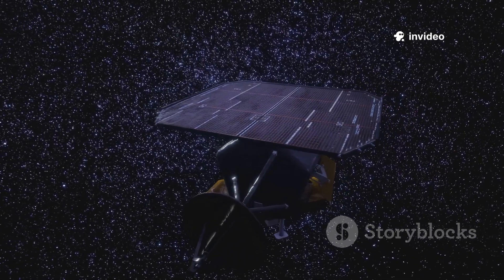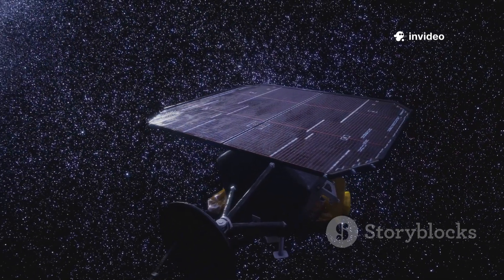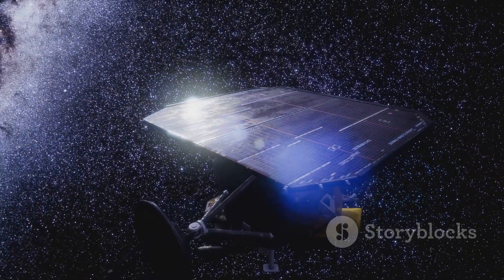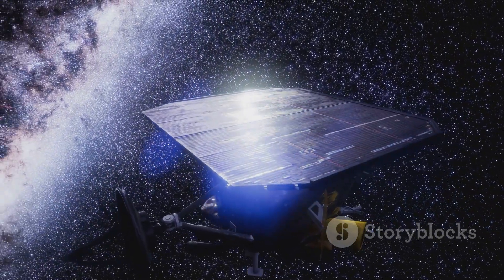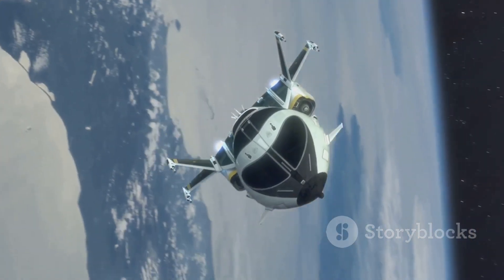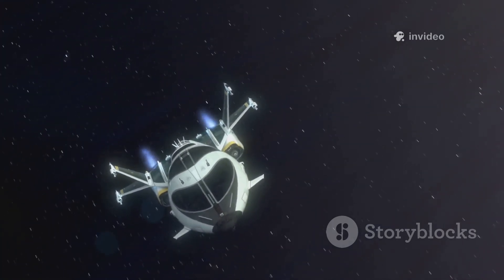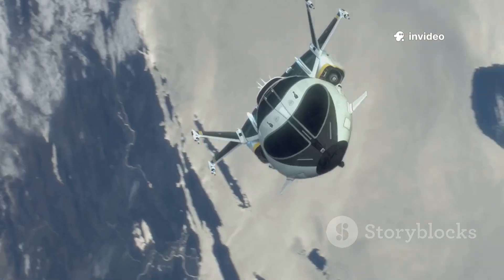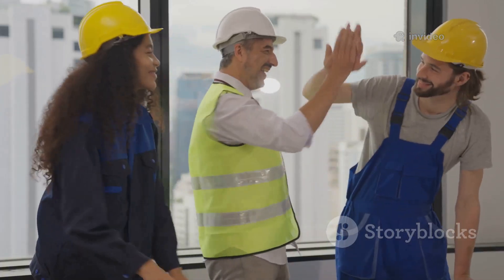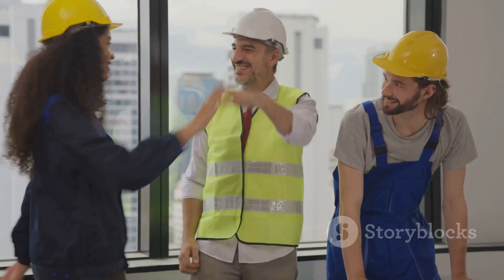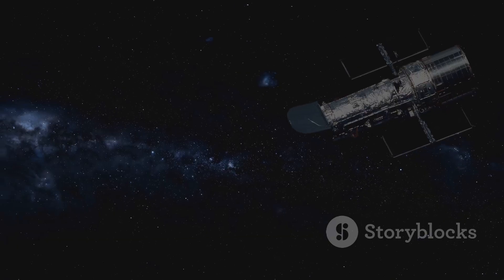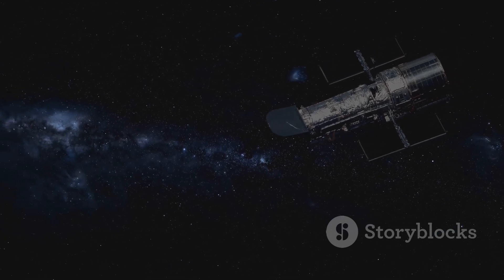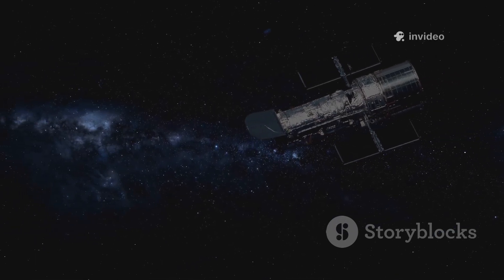The sunshield, thin as paper and the size of a tennis court, also had to fold and deploy flawlessly. On Christmas Day 2021, Webb launched. The world watched as it travelled to its final orbit, a million miles from Earth. Each step was a triumph of engineering and teamwork. Humanity's most ambitious space telescope had arrived. The adventure had only just begun.